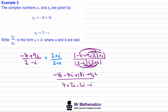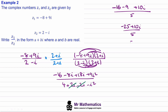Tidying up the numerator: we have negative 16, and since i squared equals negative 1, the 9i squared becomes minus 9. Collecting the i terms: negative 8i plus 18i gives plus 10i. In the denominator, the positive 2i and negative 2i cancel, and negative i squared becomes positive 1, so 4 plus 1 equals 5. This gives negative 25 plus 10i all over 5, which simplifies to negative 5 plus 2i. So a equals negative 5 and b equals positive 2.